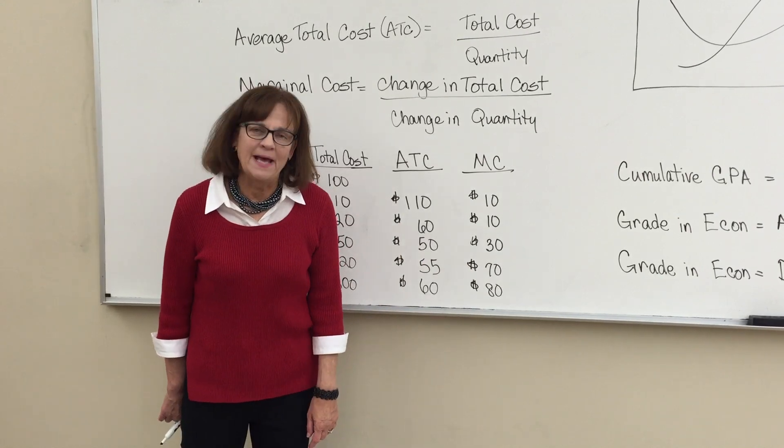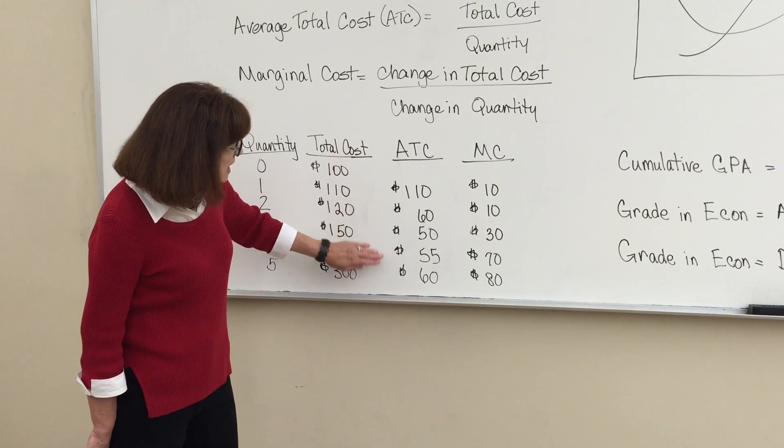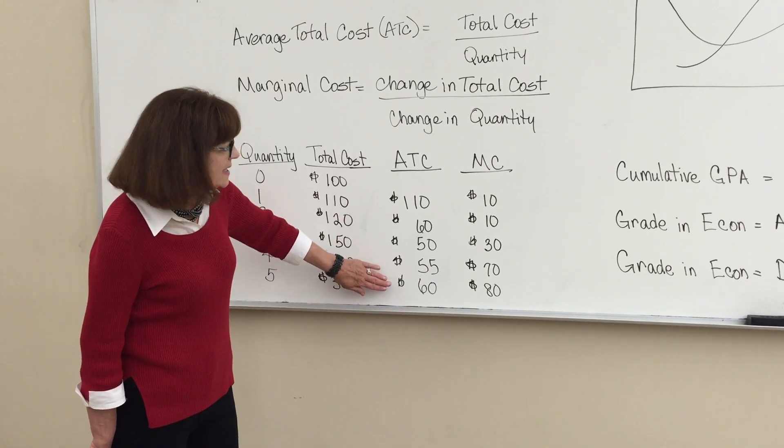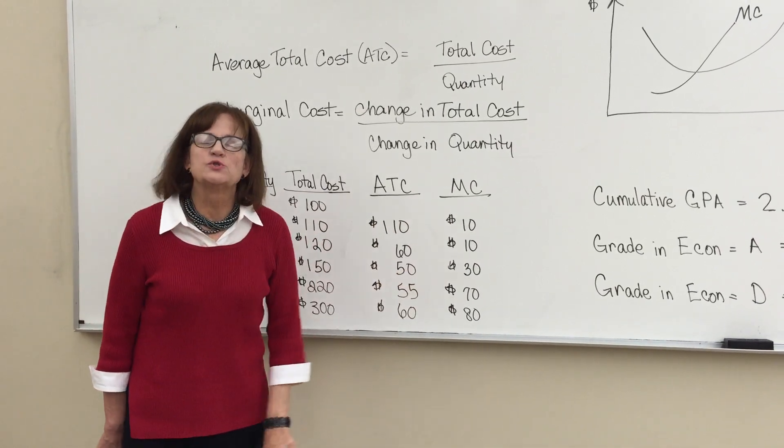You can see a pattern here. Average total cost goes down and then goes back up. Marginal cost starts low and then goes up.